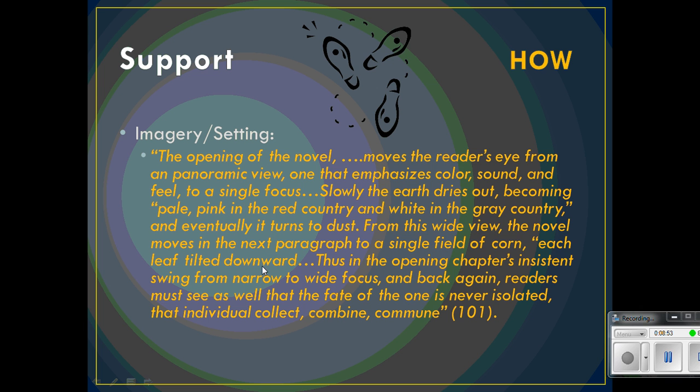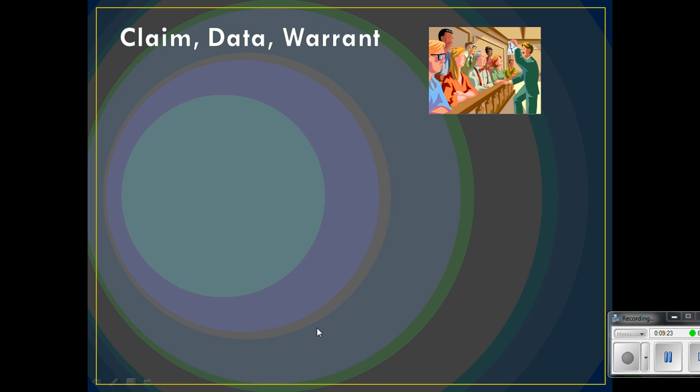Thus, in the opening chapters, the insistent swing from narrow to wide focus and back again — readers must see that the fate of the one is never isolated, that individuals collect, combine, and commune. Notice how she stakes her claim, provides her evidence, and then explains it. We're going to talk about what that means when we talk about claim, data, and warrant — and there it is right there: claim, data, and warrant.